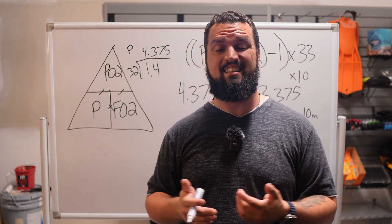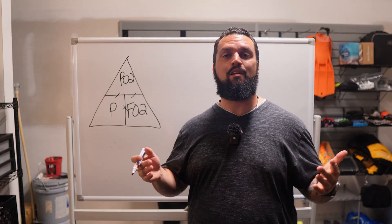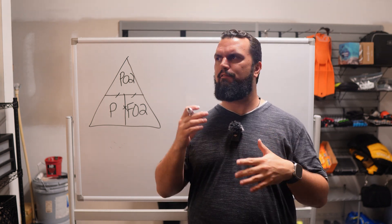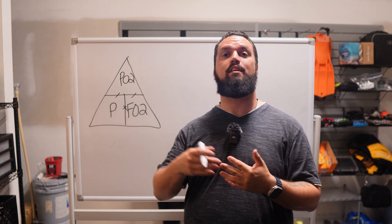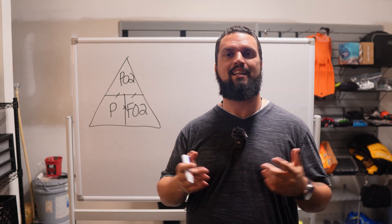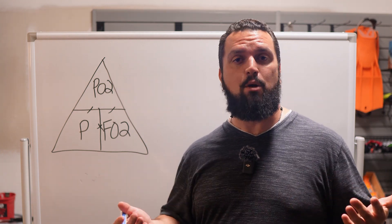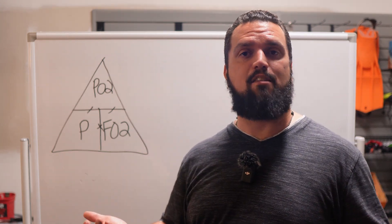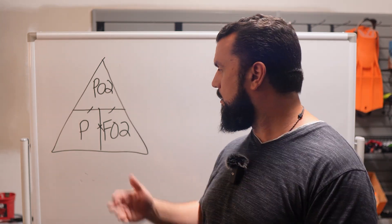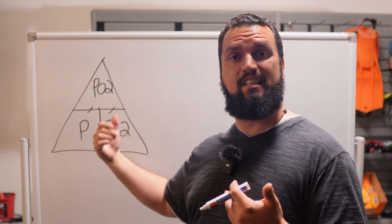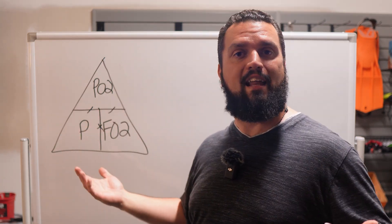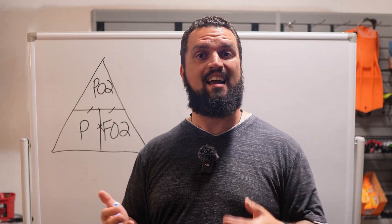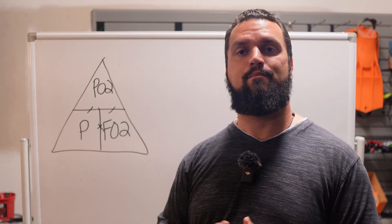Let's move on to the next calculation: how do we calculate the partial pressure of oxygen at a certain depth — essentially checking whether there's too little or too much oxygen in the blend for the depth we're planning to breathe it at. Good news is we can use Dalton's Triangle again. We know our FO2 — the percentage of the gas we're breathing — and we know our depth, which we convert to pressure. Multiply those two together and we get our PPO2.